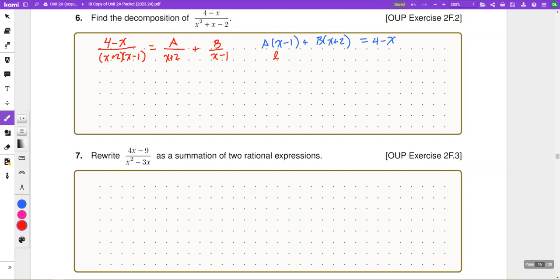If we use our cover-up method, let's let x equal 1. Then 3b is going to equal to 3, so b must be equal to 1. If we let x be negative 2, then negative 3a must be equal to 6, and therefore a must be negative 2.